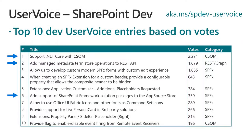Quick pointers from a user voice perspective: three of the top 10 items are going to be closed pretty soon. Support for .NET Standard — which will enable CSM to be used in .NET Core — is coming relatively soon. The add/manage data terms operations in REST API is going to be Graph APIs, and that's going to help use these operations more efficiently. And the third is add support for SharePoint Framework solution packages in App Store, planned for a mid-July timeframe. Please keep on voting and giving your feedback so we understand what functionalities are important to you.